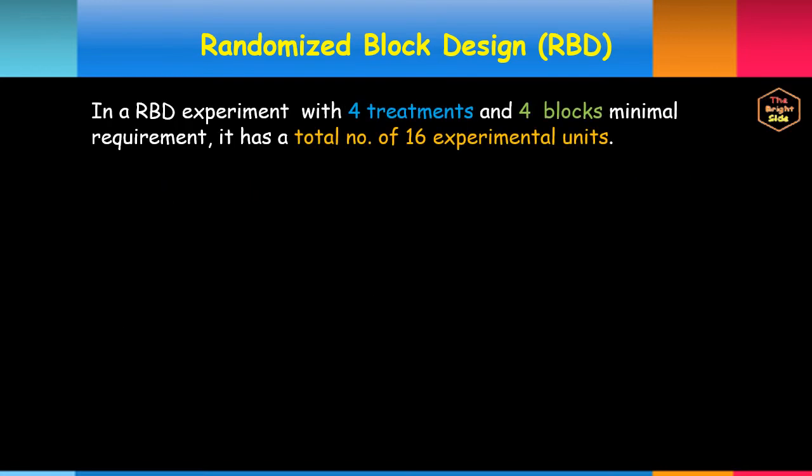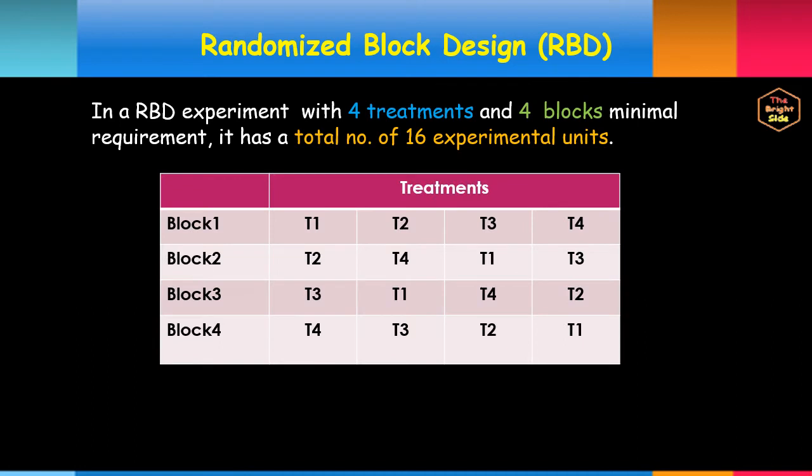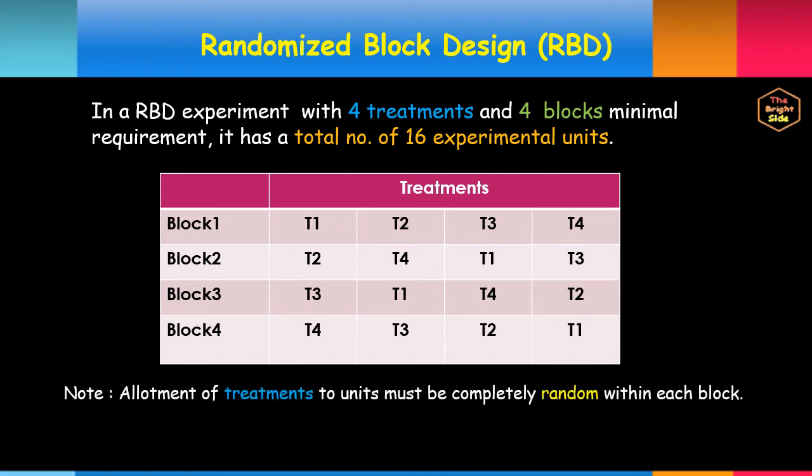The experiment has 4 treatments, 4 blocks as the minimal requirement, and 16 experimental units. Here is the illustration table of the experiment design. Take note of the random allotment of treatments to units within each block.